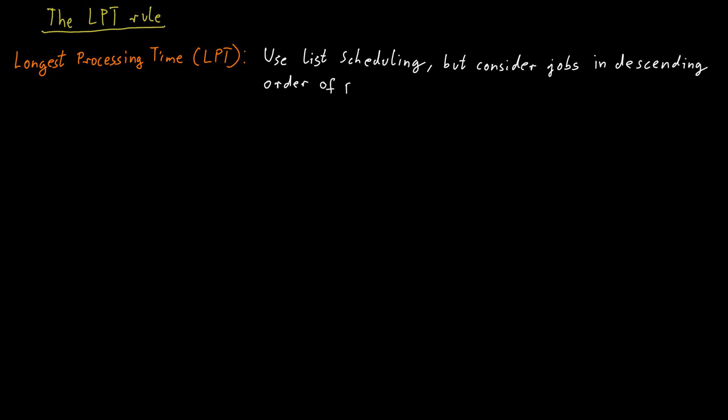We first sort them in descending order of their processing times. So we consider the heaviest, the biggest, the longest processing jobs first, and then work our way down to the shorter, easier jobs.